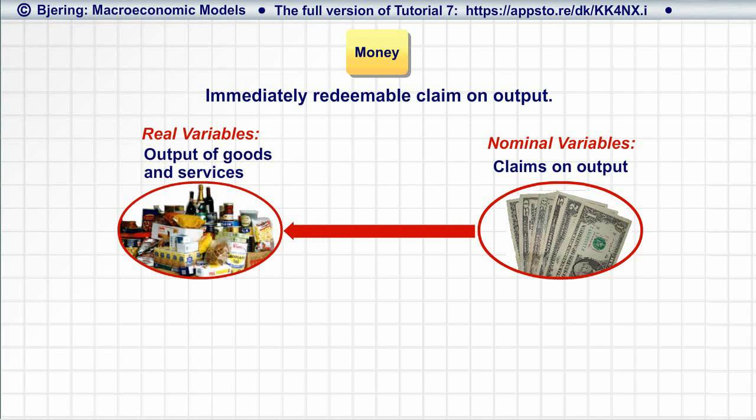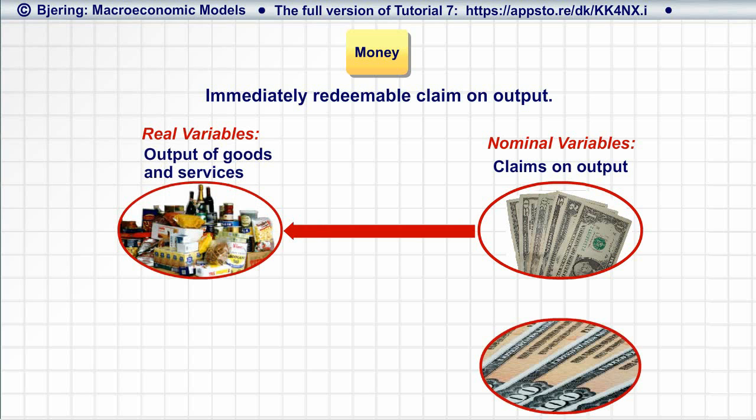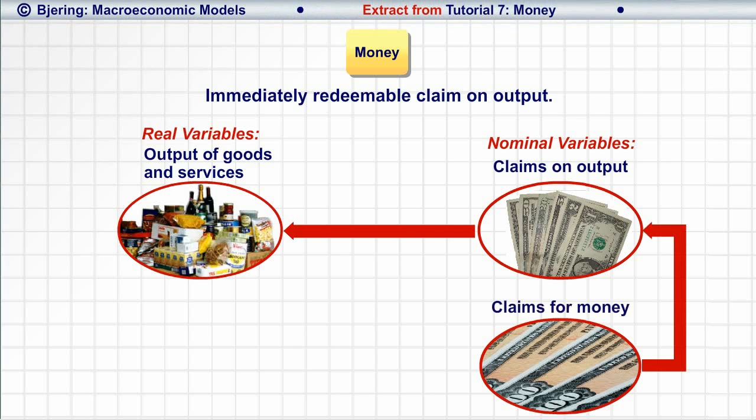In practice, there are other claims on output than money, albeit more indirect, since they, like bonds, are claims for money that in turn is a claim for goods and services. Money and claims for money both belong to a class of economic variables that we call financial claims.